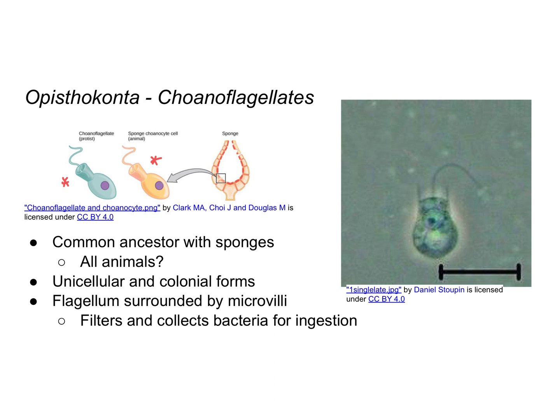This might also indicate a common ancestor with all animals. Sponges are a simple animal that other animals likely evolved from. Choanoflagellates have both unicellular and colonial forms. One of their defining characteristics is that they have a flagellum surrounded by microvilli, which are small cellular extensions that help to increase surface area.